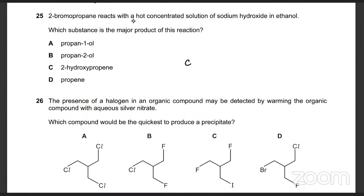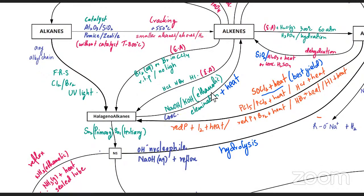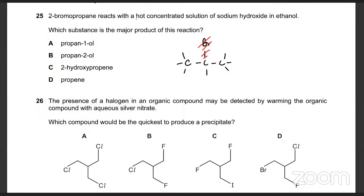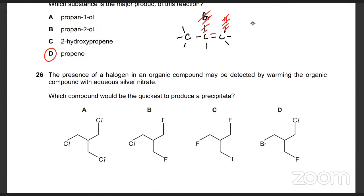2-bromopropane: propane is three carbon atoms and you have bromine on the second carbon. It's reacting with hot concentrated NaOH in ethanol — ethanolic NaOH. With ethanolic NaOH, the halogenoalkane undergoes elimination: it will turn into an alkene. The Br is removed and along with a neighboring H, giving you an alkene. There's only one product because the double bond on either side is the same thing.